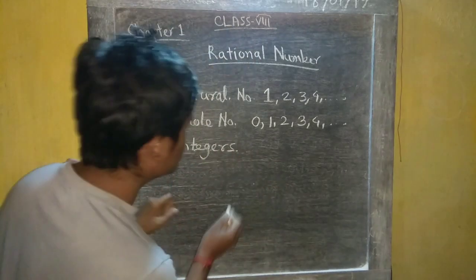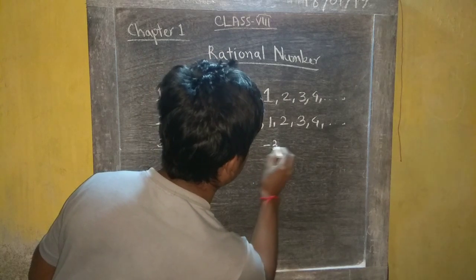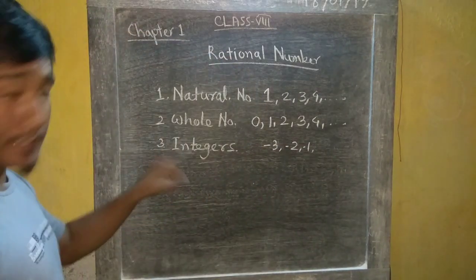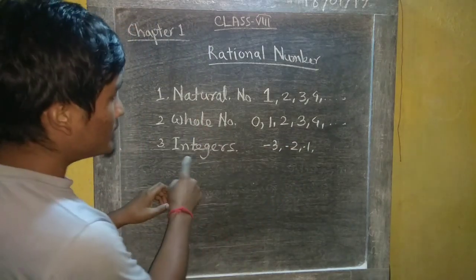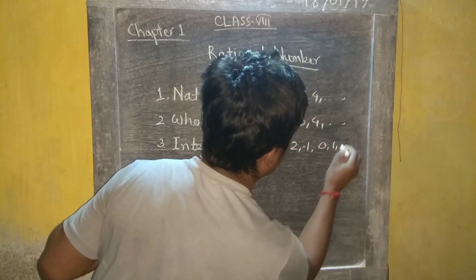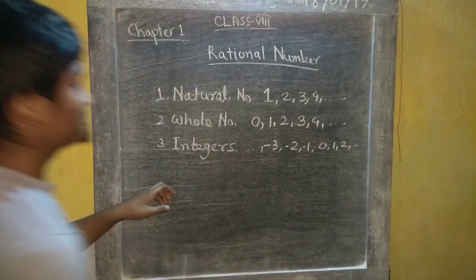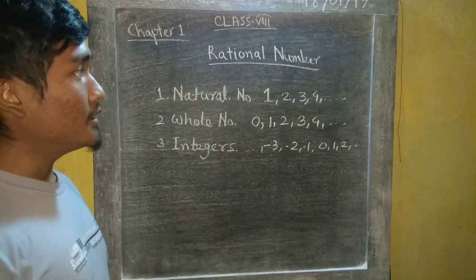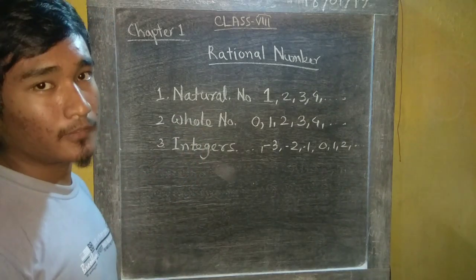It will be negative numbers, like minus 3, minus 2, minus 1, then 1, 2, etc. So this is natural numbers, whole numbers, and integer numbers.